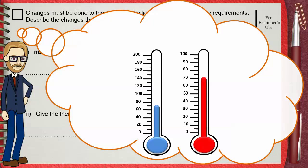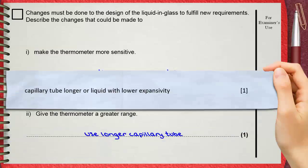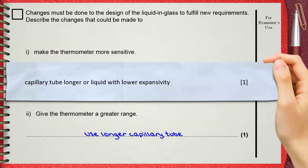Also, only one is needed here. Use longer capillary tube. The mark scheme says capillary tube longer or liquid with lower expansivity. This is for one mark.